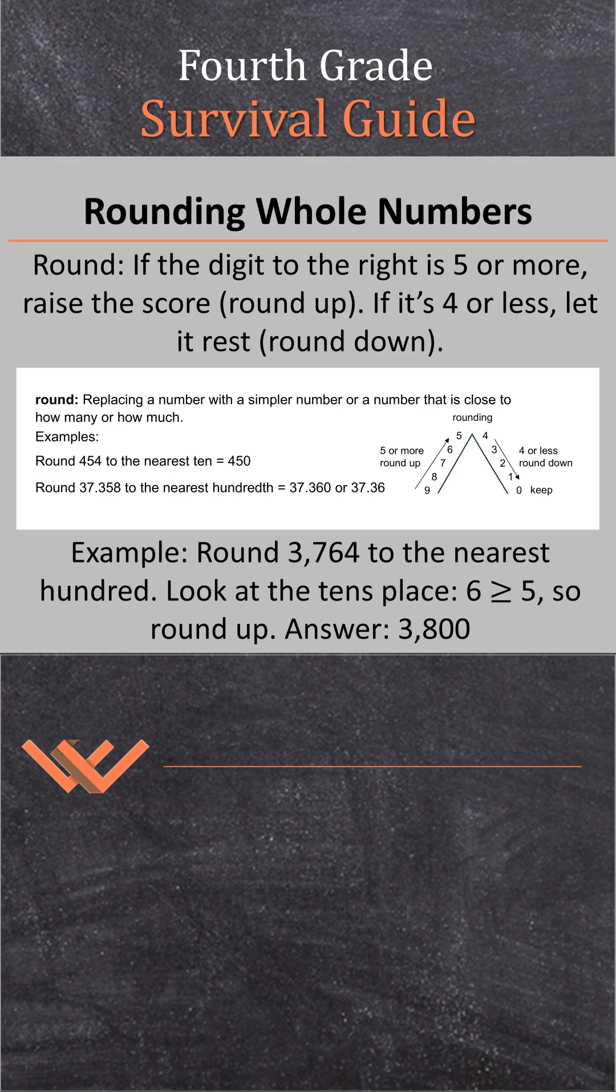So when we're looking at this, you're like, wait a minute, what does that mean? Well, when we're talking about to the right of the number, that means looking at the place value. So if you're looking at the tens, that's what you're rounding to. You have to look at the ones in the place value, which is to the right.